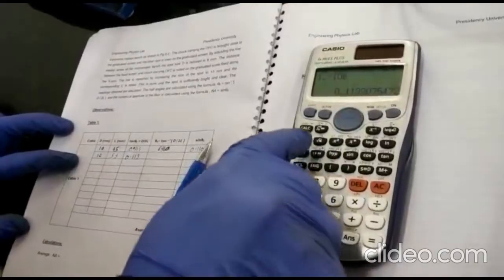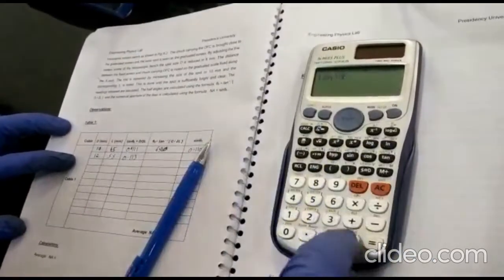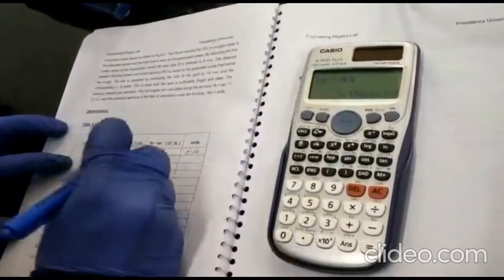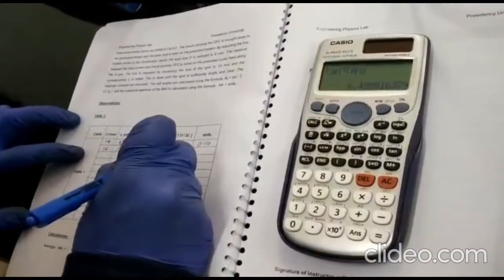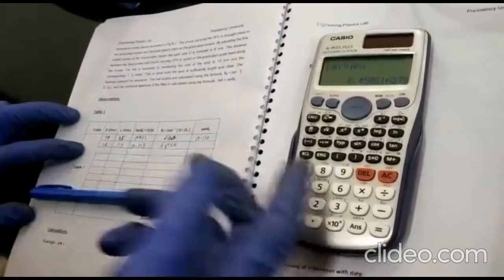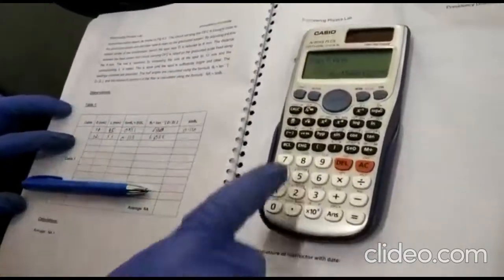So that is tan theta. You need to find how much is theta. So tan inverse, so the answer will give you 6.4588. Okay, 6.458, just 4 decimal places you can write.